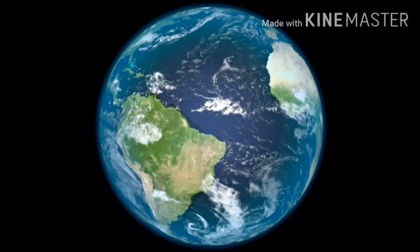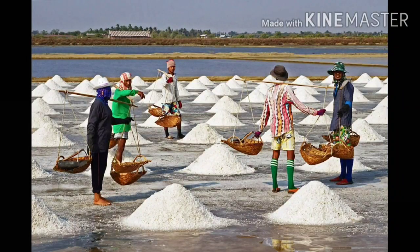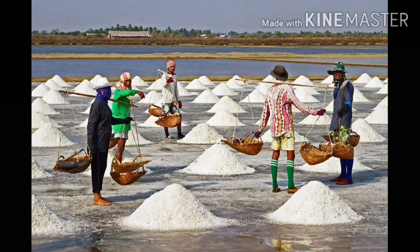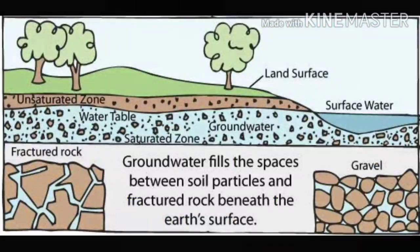There is a lot of water on the earth, but most of it is in the oceans. The water of the oceans is salty, so we cannot use it. We use water from lakes, ponds and rivers. We also take it out from under the ground.